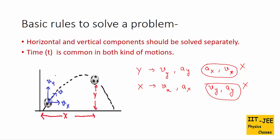The second rule is that time is common in both kinds of motion. In projectile motion, the same time is taken to travel horizontal distance x and vertical distance y. So you can use the same time t to solve for both the vertical distance y and the horizontal distance x.